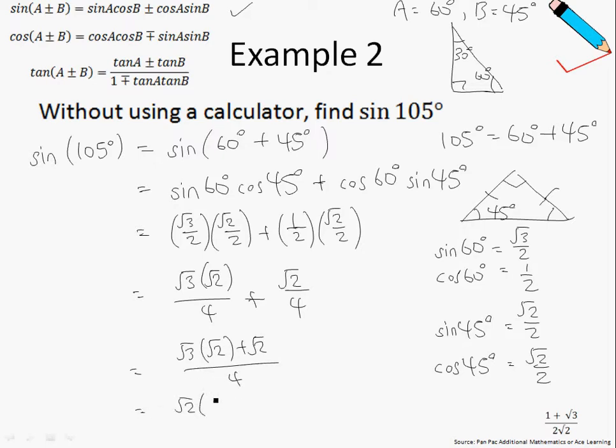And √2 can be factorized, so you have √2(√3 + 1) over 4. And this is your final answer.